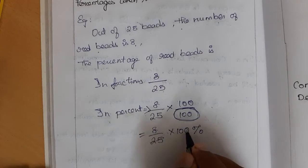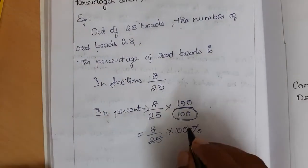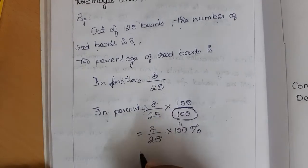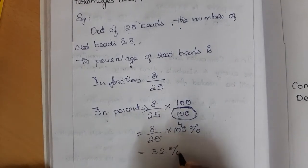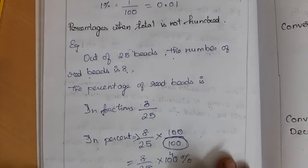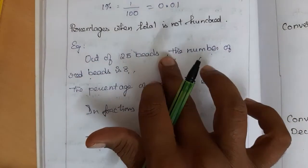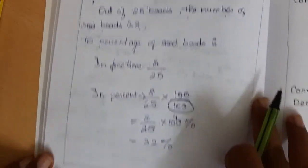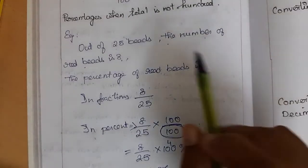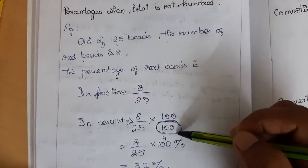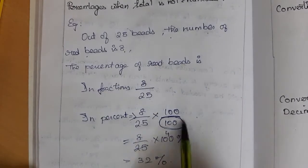So we get 8 by 25 into 100 percent. Now we simplify: 100 divided by 25 is 4, and 4 times 8 is 32 percent. So if we have 8 red beads out of 25 beads, then we have 32% red beads. If the total is not 100, we can find the percentage by multiplying by 100 and dividing by 100.